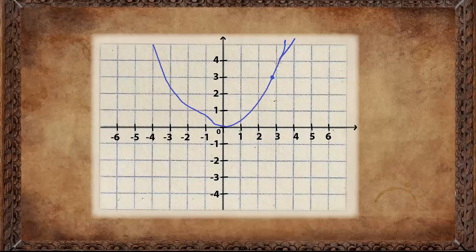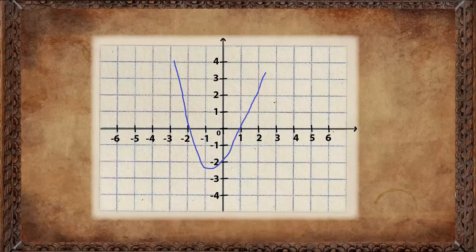For example, if you want to find the gradient of a curve at one particular point, you draw a tangent line — a line that cuts the curve at exactly one point. Then you find the gradient of that line the same way as before: drawing a little triangle, change of y by change of x. That is the gradient of the curve at that point.